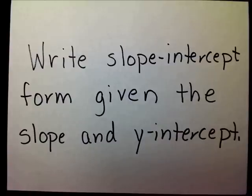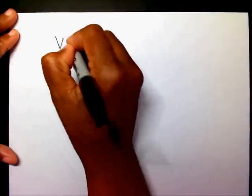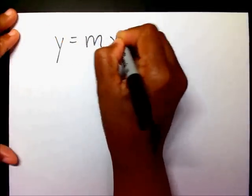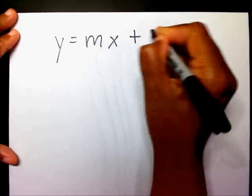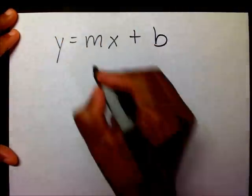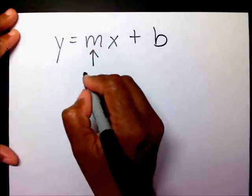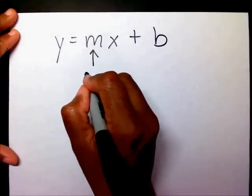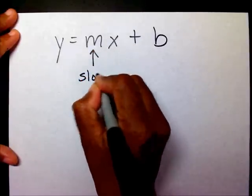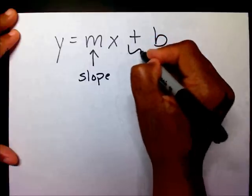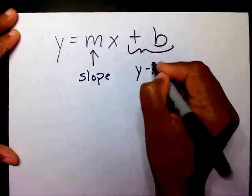Today we're going to write the slope-intercept form given the slope and the y-intercept. Let's review what the slope-intercept form really is. It's y equals mx plus b, where m is the slope and b is your y-intercept.